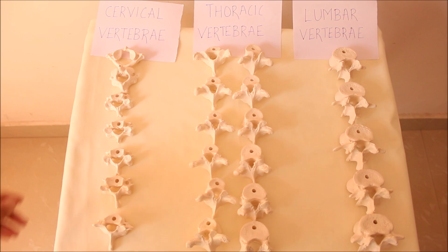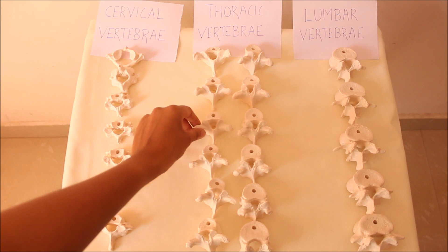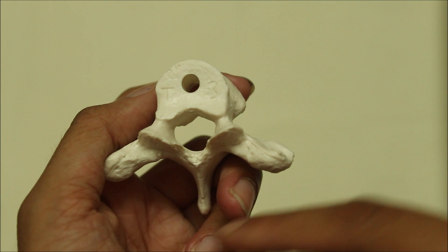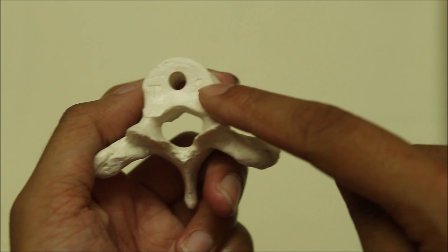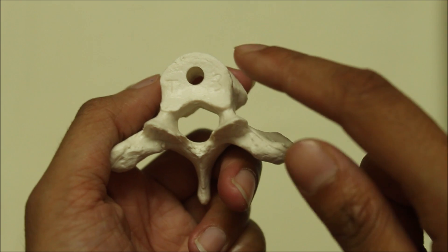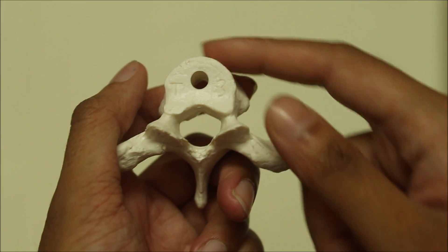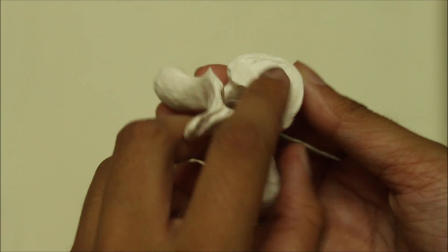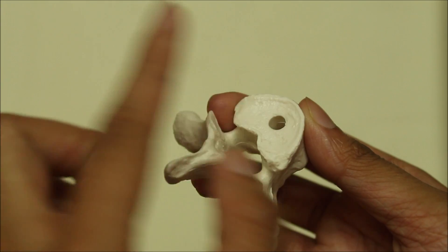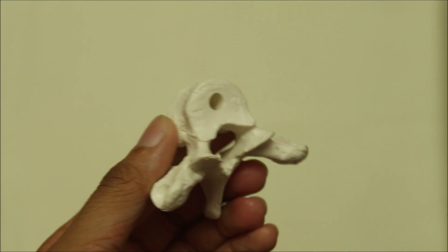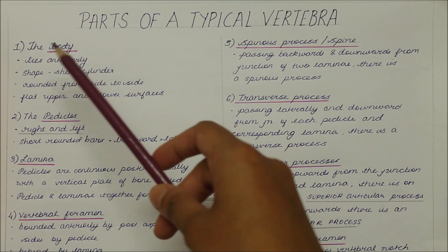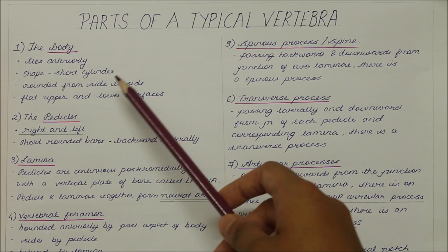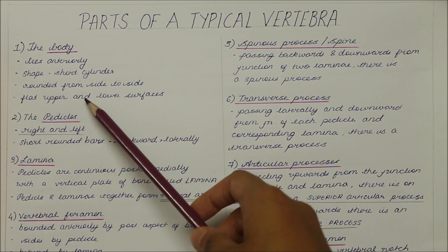Let's look at the parts of a typical vertebra, using the third thoracic vertebra as an example. A typical vertebra has a body which lies anteriorly. It is shaped like a short cylinder, rounded from side to side, with flat upper and lower surfaces that are attached to those of the adjoining vertebrae by intervertebral discs.